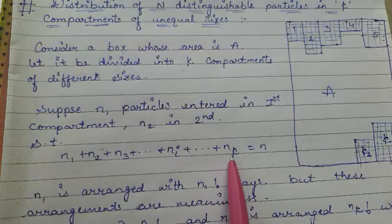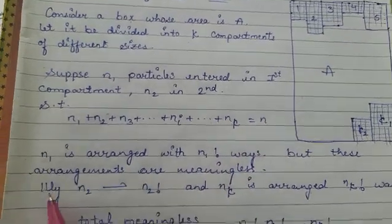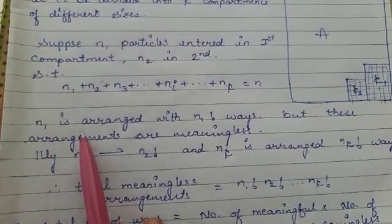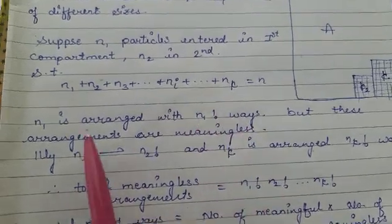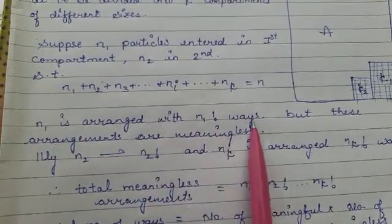All is equal to N particles. As we know, N1 can be arranged in N1 factorial ways, which we can arrange N1 factorial times.